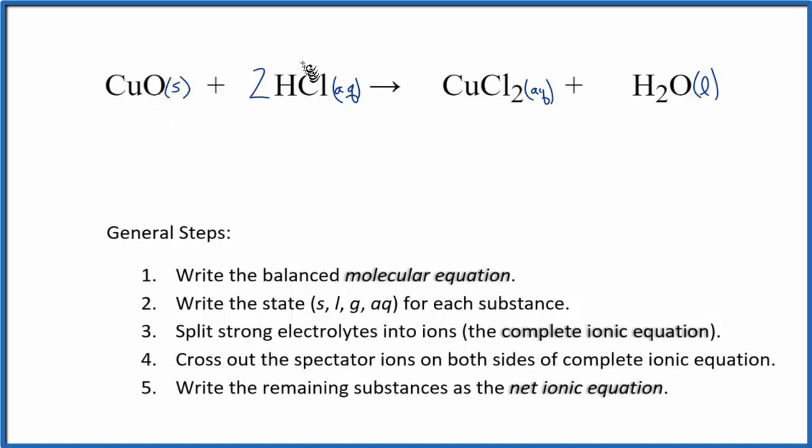But for the hydrochloric acid, hydrogen's in group 1, has a 1 plus charge. Chloride has a 1 minus. And over here, we know the chloride is 1 minus. We have 2 of them, so this copper has to be 2 plus. And then water, we don't split that apart. So for ionic equations, solids, gases, and liquids, we leave them as they are. We don't split them apart.